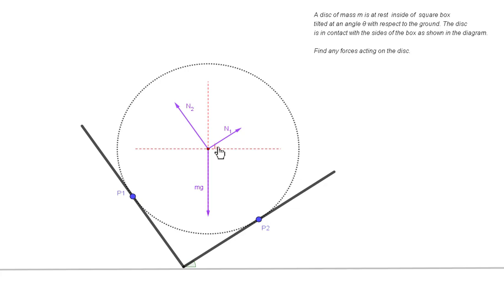So n1, for example, will have some components horizontally and some components vertically. And likewise for n2. So if we choose this regular Cartesian coordinates as our coordinate system, we'll have one component for mg, two for n1, and two for n2.